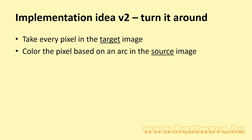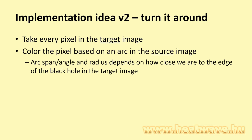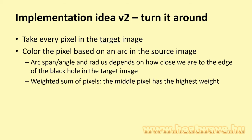The point is not to make an accurate model, but to create an image that looks cool. Again, I was using arcs. Each pixel in the target image gets its color from the weighted sum of pixel colors along an arc in the source image. The closer the target pixel is to the edge of the black hole, the wider the source arc.